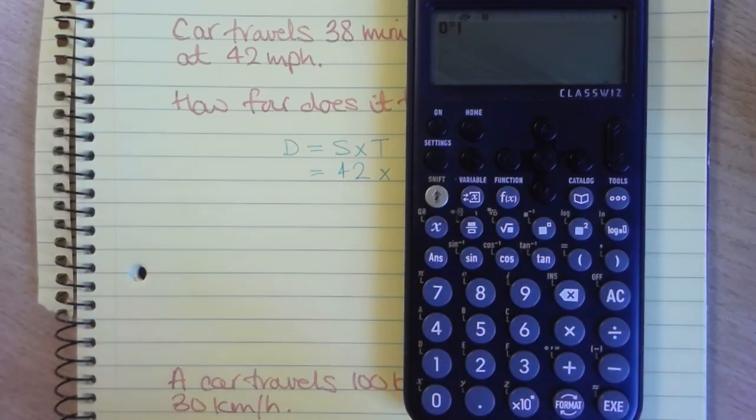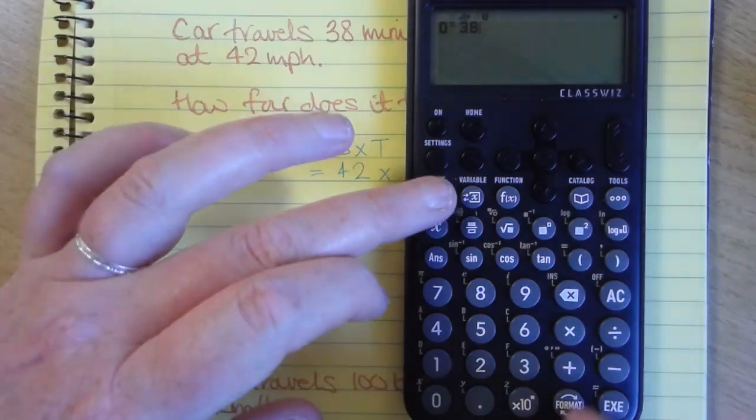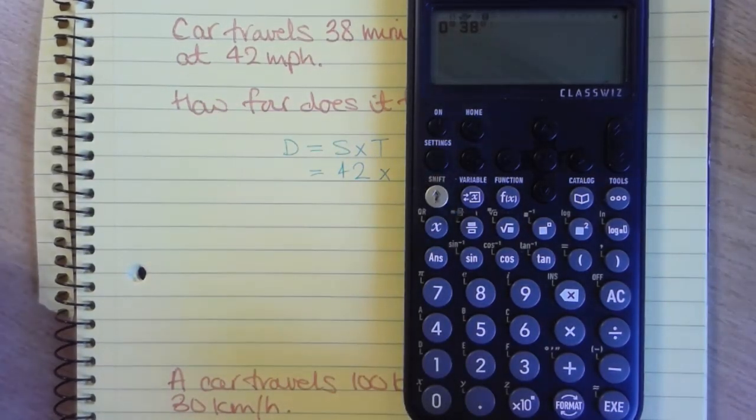We press shift and the time button. So that tells us it's 0 hours. 38, shift, time button. That tells us 38 minutes.